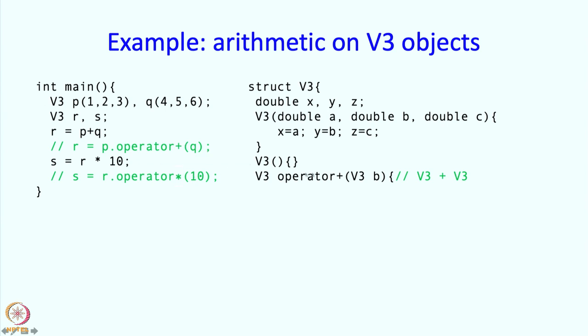So in this, the receiver is always there and the second, the right hand side operand of the plus is going to be this b. So for this expression which got translated to this, p is going to be the receiver, q is going to be the right hand side operand or the b value over here.